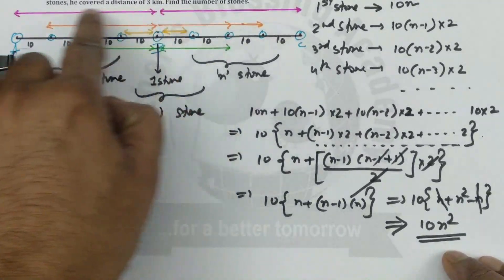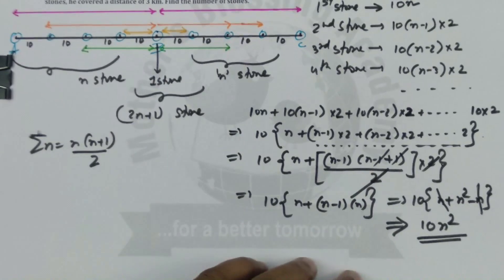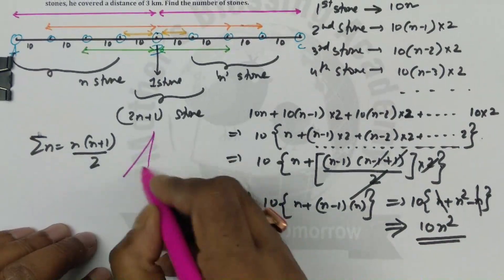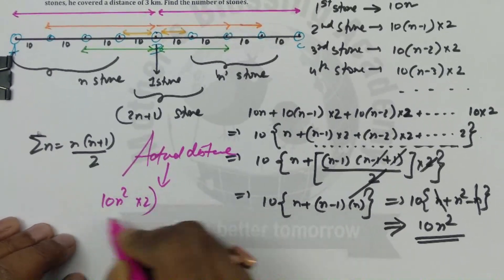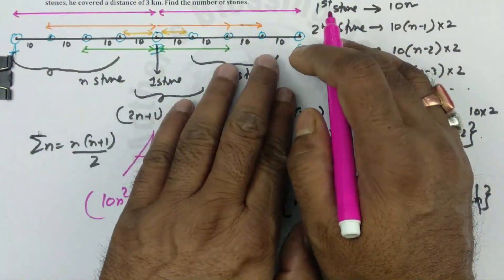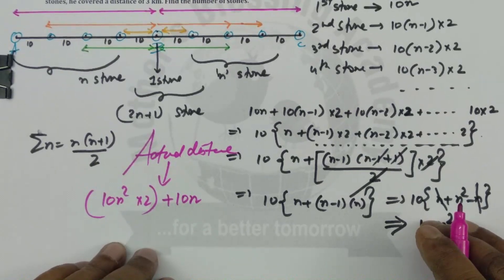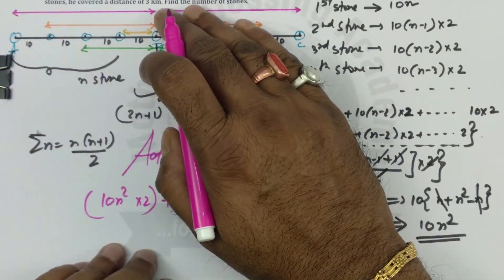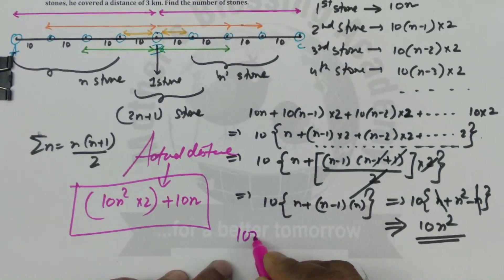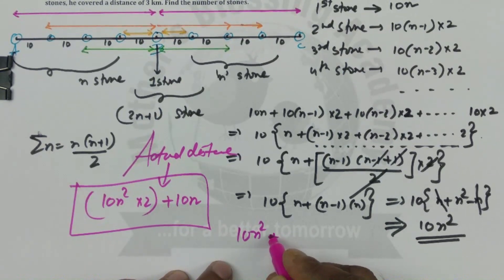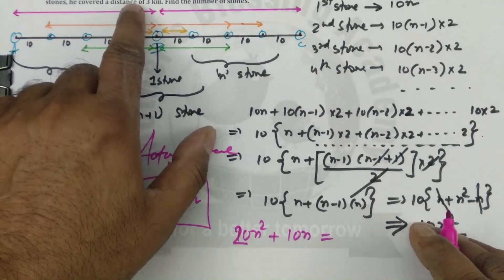This result covers one side. The actual total distance covers both the left and right sides: 10n² × 2 = 20n². However, between left and right there is a 10n meter difference — the starting side is 10n meters less. So the actual total distance covered is 20n² + 10n, which must equal the given total distance of 3 km = 3000 meters.